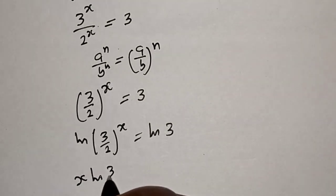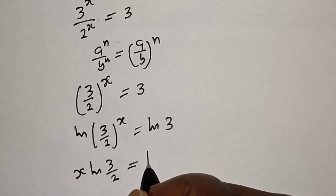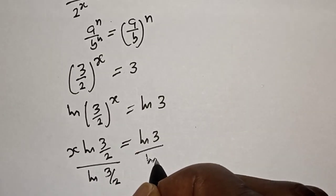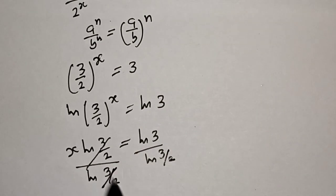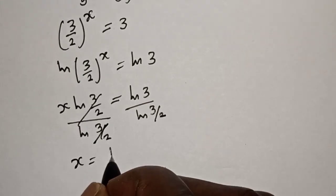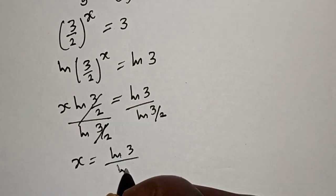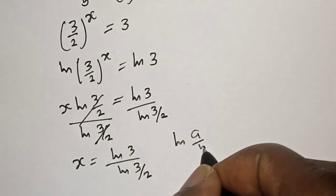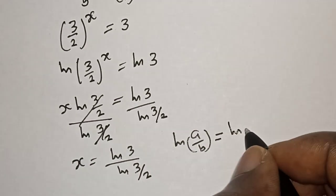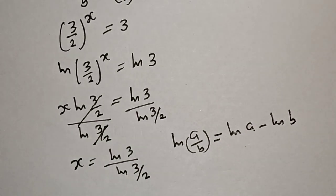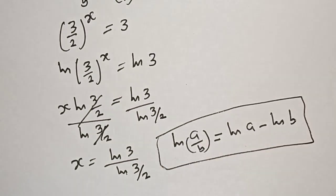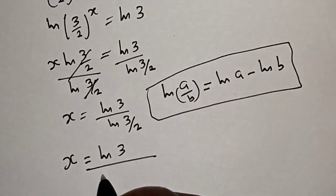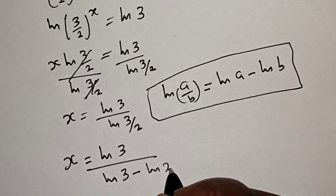Then we have s times natural log of 3 over 2 is equal to natural log of 3. Dividing both sides by natural log of 3 over 2, this cancels, and s is equal to natural log of 3 over natural log of 3 over 2. Now, natural log of a over b is equal to natural log of a minus natural log of b, so this becomes s is equal to natural log of 3 over natural log of 3 minus natural log of 2.